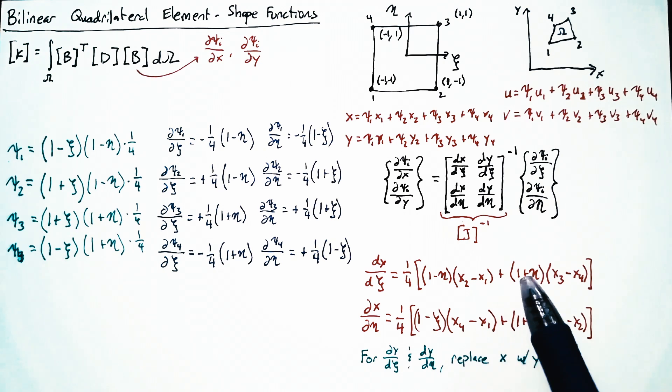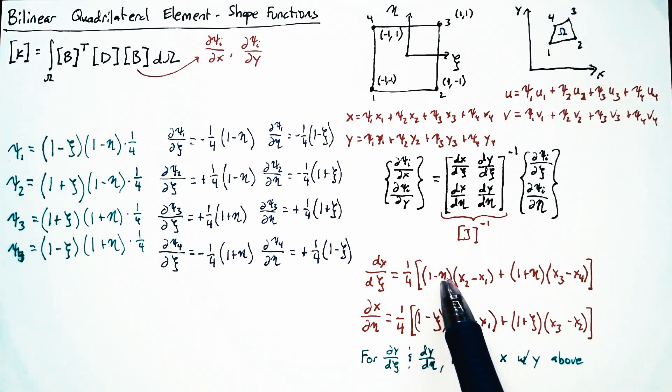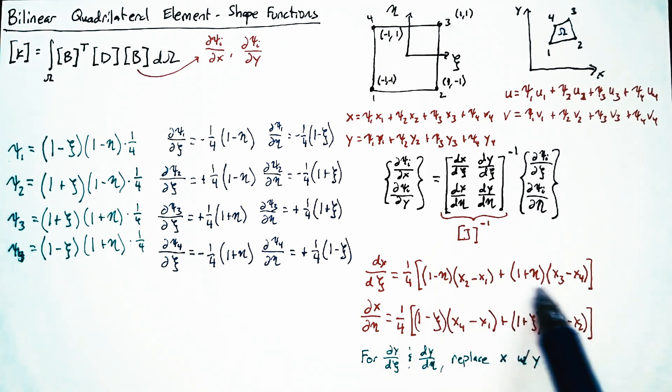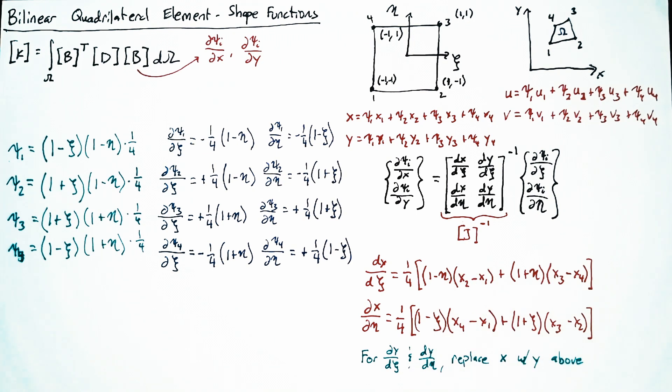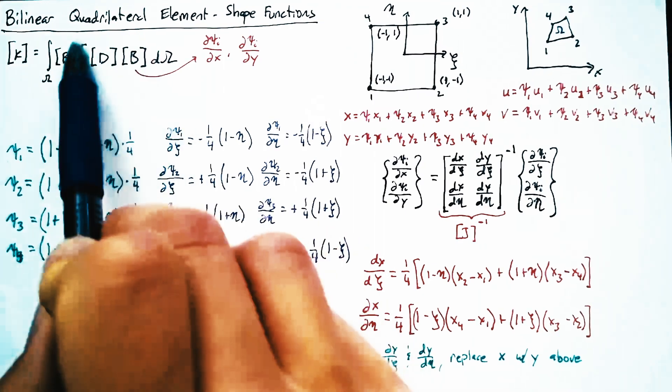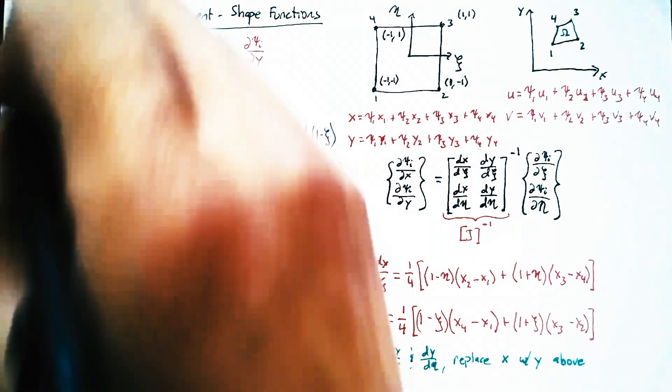This is not constant, right? It is changing with xi and eta. And so our Jacobian, whenever we take that inverse, we're going to have variation over that space, which is not easily integrable. So before, we were able to say that this was constant and just integrate over our area and we were done. This time, we have to do a little bit more work.